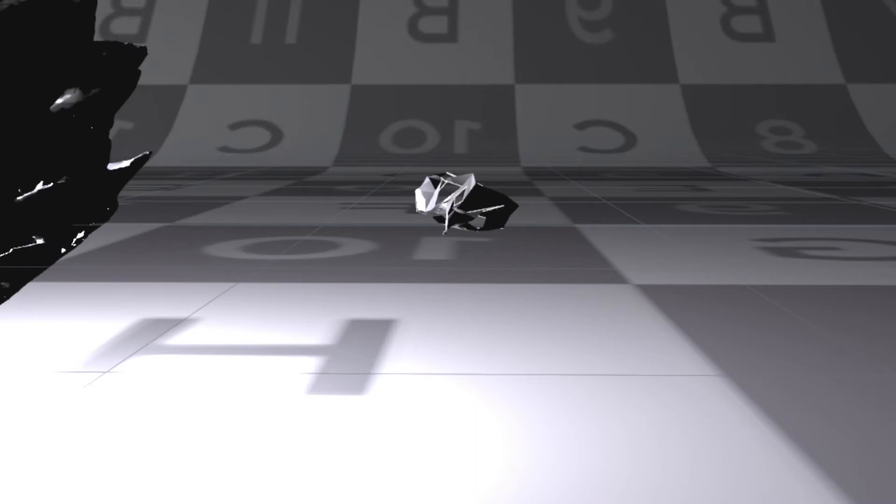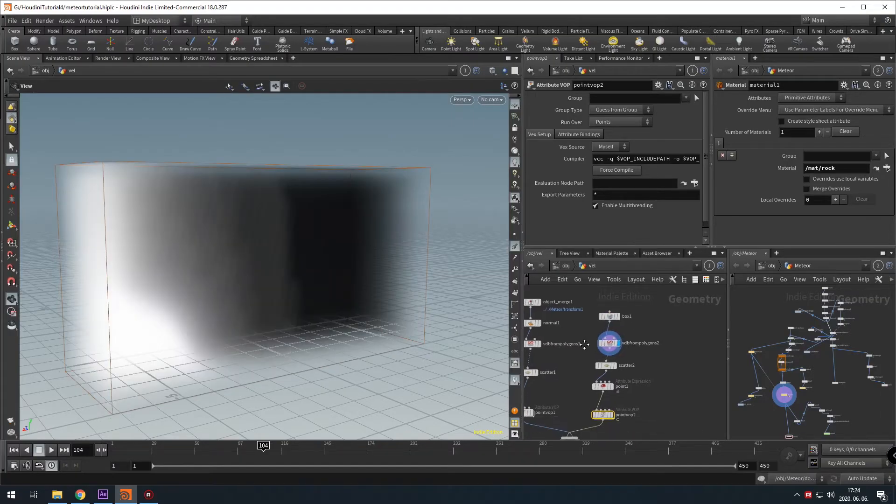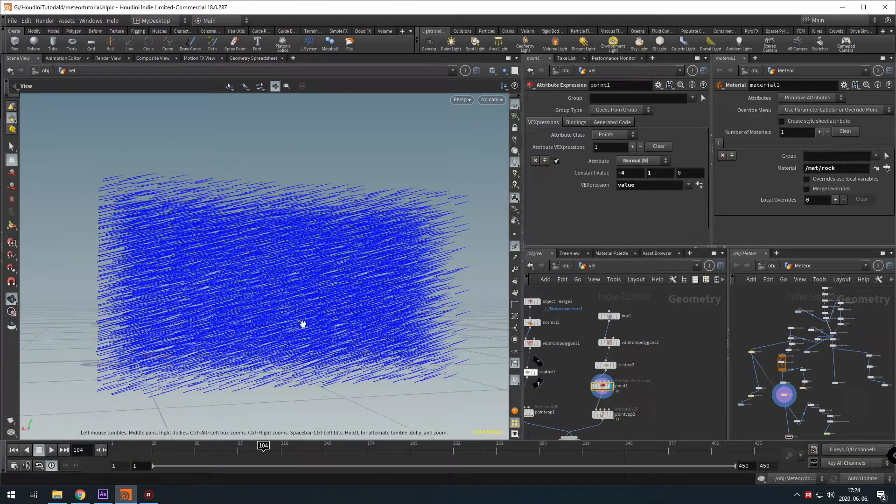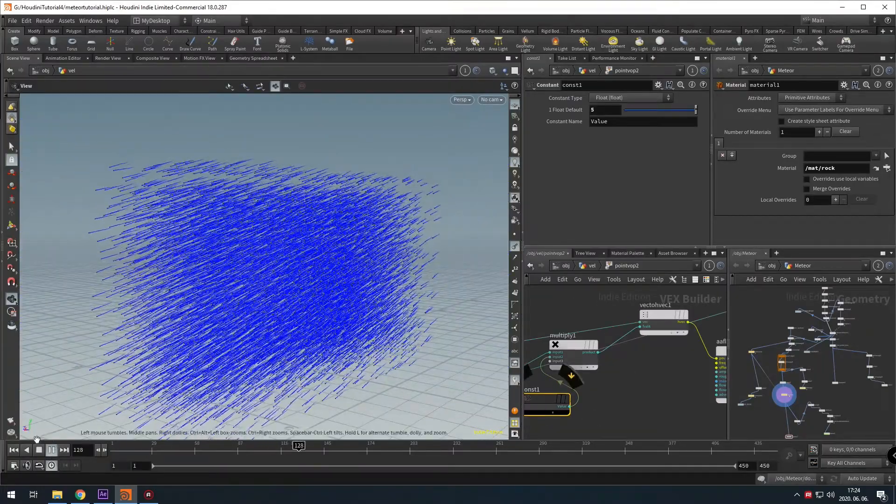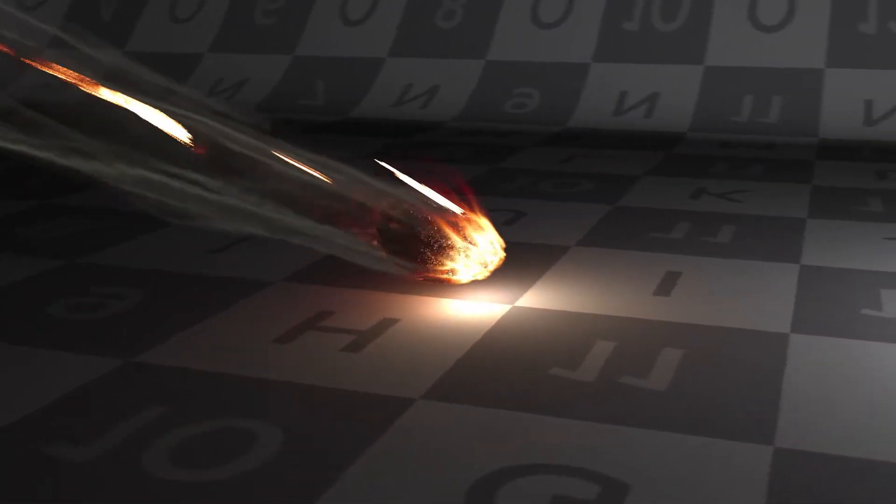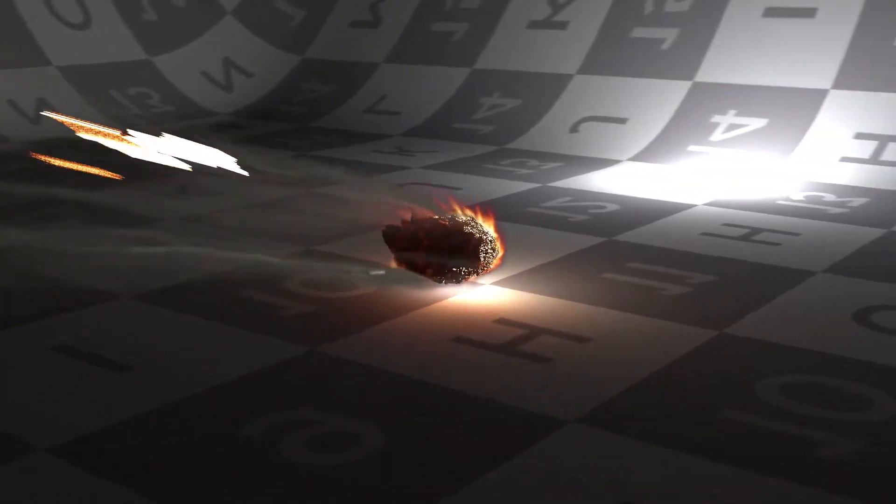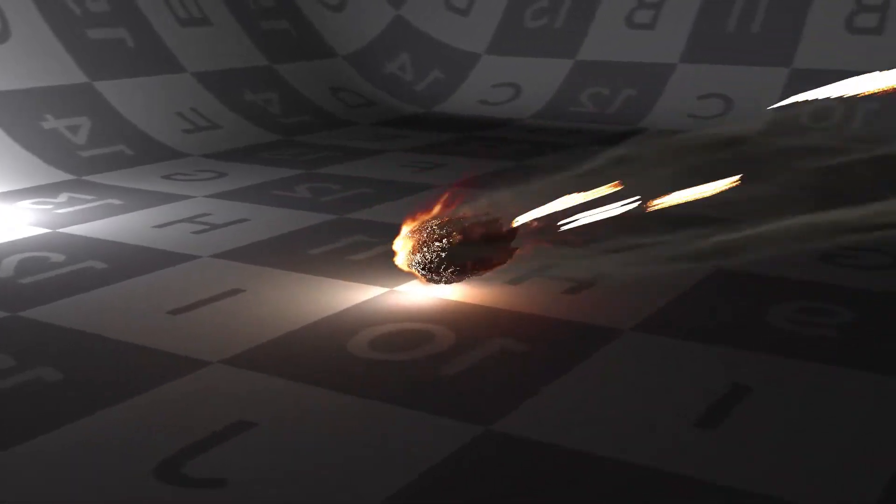Then I set up the particle simulations where the particles will flow along the meteor surface. Then I turn the particle simulation into a volume to get a fiery look. Then I set up pyro simulations and smoke simulations.